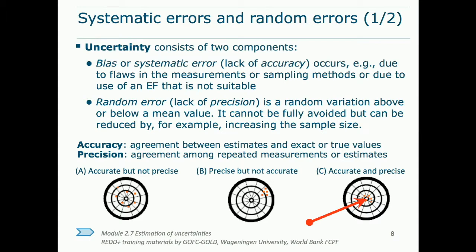Two key concepts are accuracy and precision. Accuracy is defined as the agreement between the estimates and the true values. If something is systematically inaccurate — meaning the mean of the estimates deviates consistently from the mean of the true values — then it is said to be biased, and this would be the result of flaws in the measurement or sampling methodologies. The second aspect is precision, which is agreement between repeated measurements of the estimate. If repeated measurements do not agree or have large variance, then their precision is low, and the methodology is said to have large random error. As shown in the figure, it is possible to be only accurate, only precise, or both. Ideally, we want both accurate and precise.